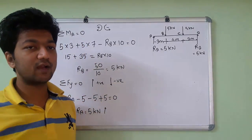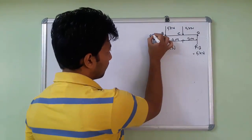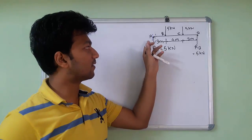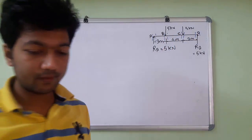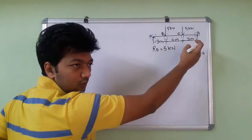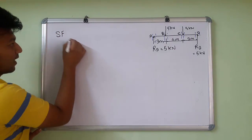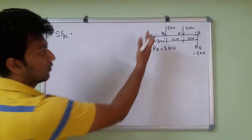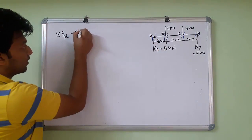Now we know all the forces and have to find the shear force and bending moment diagram. To find the shear force diagram, we split each point into two sections: left and right. Moving from left to right, upward forces are positive and downward forces are negative. Shear force at A left (SF AL) — there are no forces on this side, so SF AL equals 0 kN. Shear force at A right (SF AR) — only RA acts upward, so SF AR equals positive 5 kN.